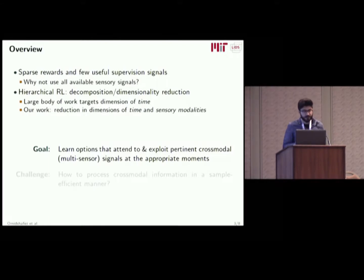Specifically, our goal is to learn options that attend to and exploit pertinent cross-modal signals at the right moment to achieve our task. This is very challenging because as we add more and more sensors, the agent has to work harder to find correlations between these sensory signals and the reward it's getting back from the environment. So the main challenge is: how do we process this cross-modal information in a sample efficient manner?